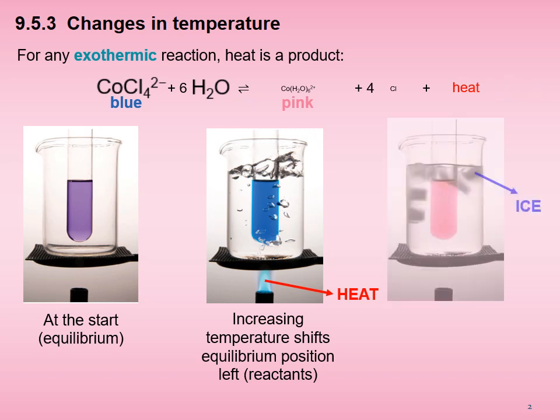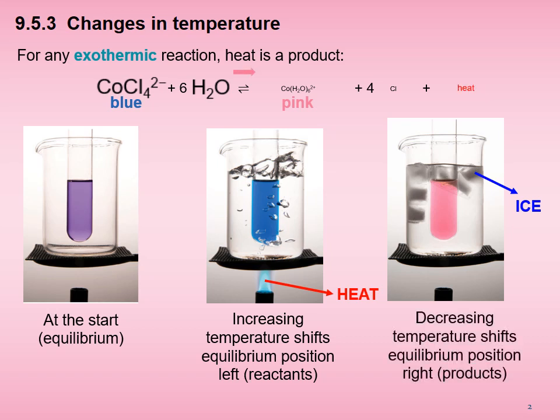When the system is cooled with ice, the temperature decreases. The mixture turns from blue to pink — the blue tetrachlorocobaltate(2+) ion is encouraged to be converted into the pink hexa aqua cobalt(2+) ion. Cooling the system upsets it; it has gotten used to the heat. The change is the subtraction of heat, so the system fights the change by trying to recreate some of the missing heat, and shifts the position of equilibrium to the right to favour product formation.